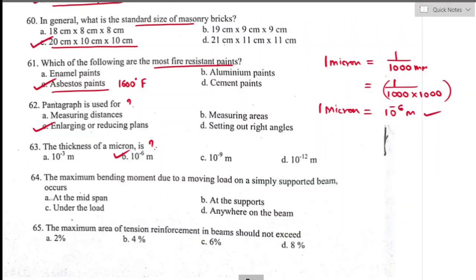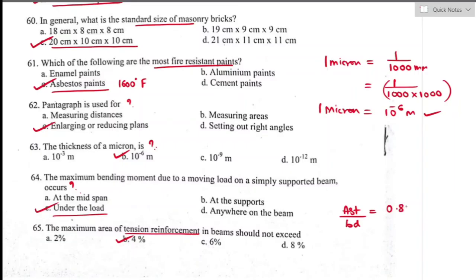Question number sixty-four: the maximum bending moment due to a moving load on a simply supported beam occurs under the load, very close to the center of the set of loads. Option C is the right answer. Question number sixty-five: as per IS 456-2000, the maximum area of tension reinforcement in a beam shall be limited to 4% of gross sectional area. Minimum tensile reinforcement: Ast/(bd) = 0.85/fy.